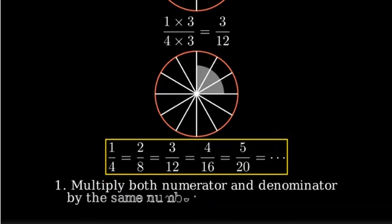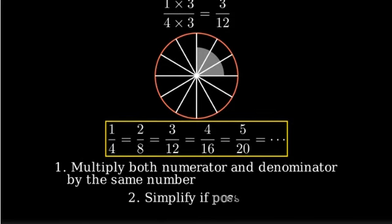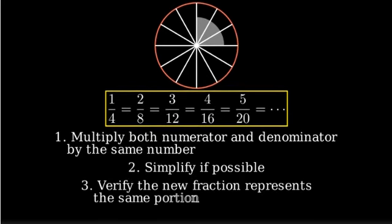Remember to find equivalent fractions. First, multiply both the numerator and denominator by the same number. Second, simplify if possible. And third, verify that the new fraction represents the same proportion.